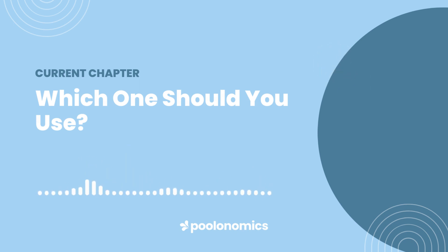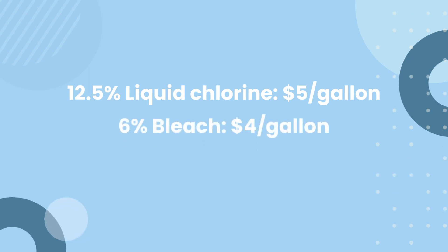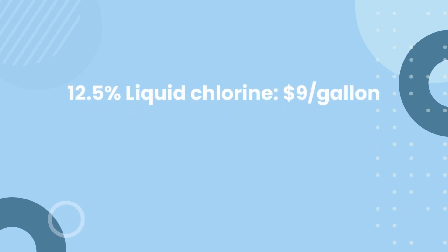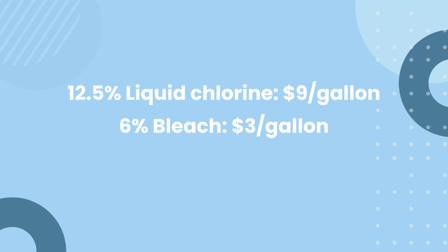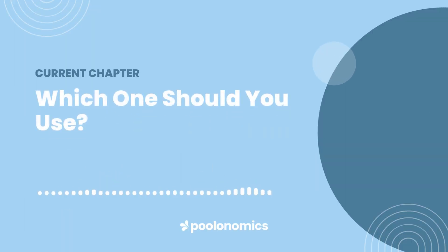The cheaper product will depend on your region, the brand you buy, the store you buy from, and any bulk discounts or promotions that happen to be running. For example, you might find 12.5% liquid chlorine for $5 per gallon, while 6% bleach is only slightly cheaper at $4 per gallon — in that case, liquid chlorine would be the clear winner. Meanwhile, someone else might find the same 12.5% liquid chlorine at $9 per gallon, while 6% bleach is only $3 per gallon — in that case, buying twice as much bleach would work out much cheaper. Overall, if cost matters more than convenience, it's always worth running the numbers.